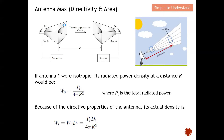If antenna one is isotropic — meaning it radiates power evenly in all directions — the radiated power density at a distance r is governed by the equation W₀ = P_t / (4π r²), where P_t is the total radiated power at the output of the antenna and r is the distance between the transmitter and receiver.